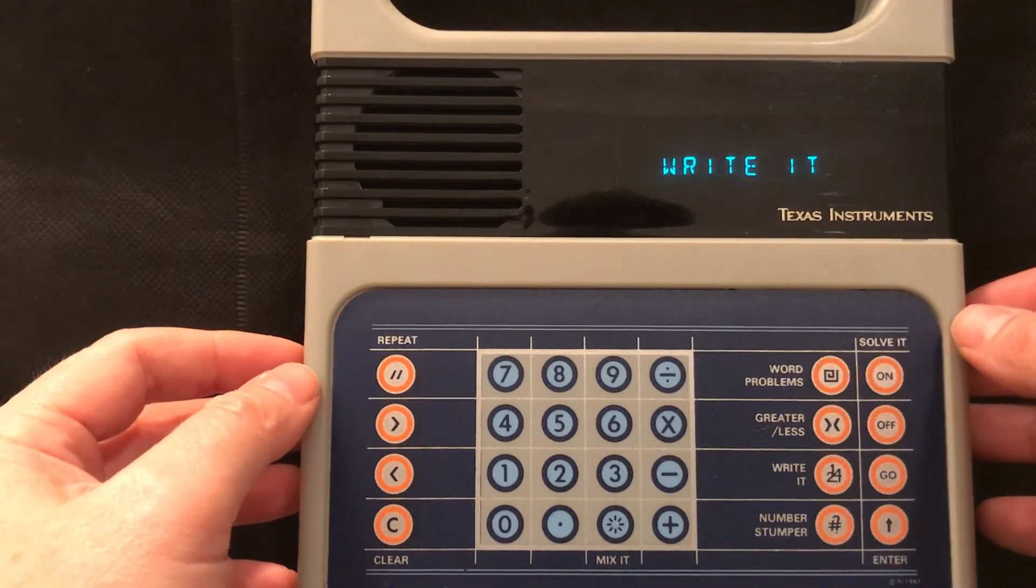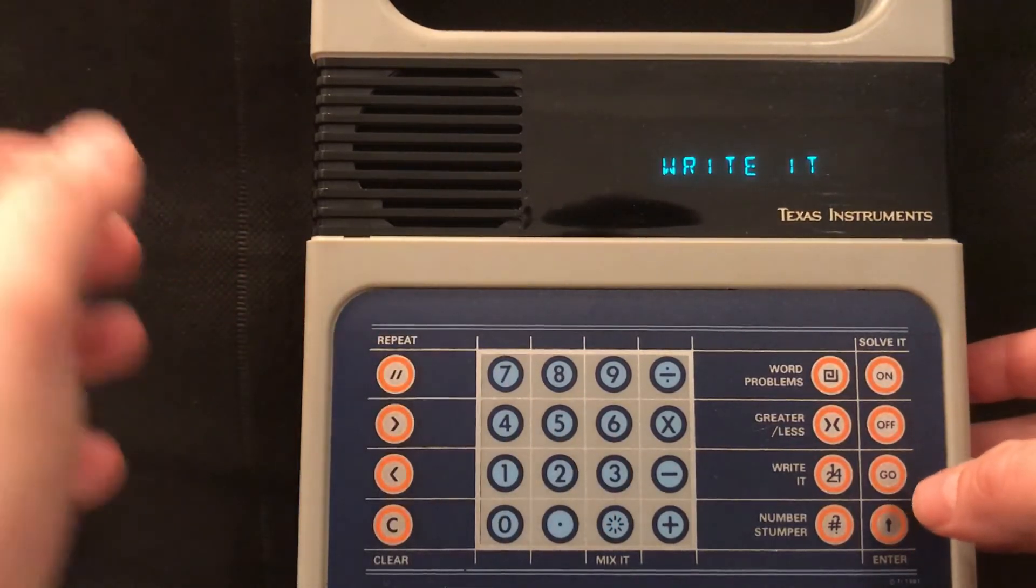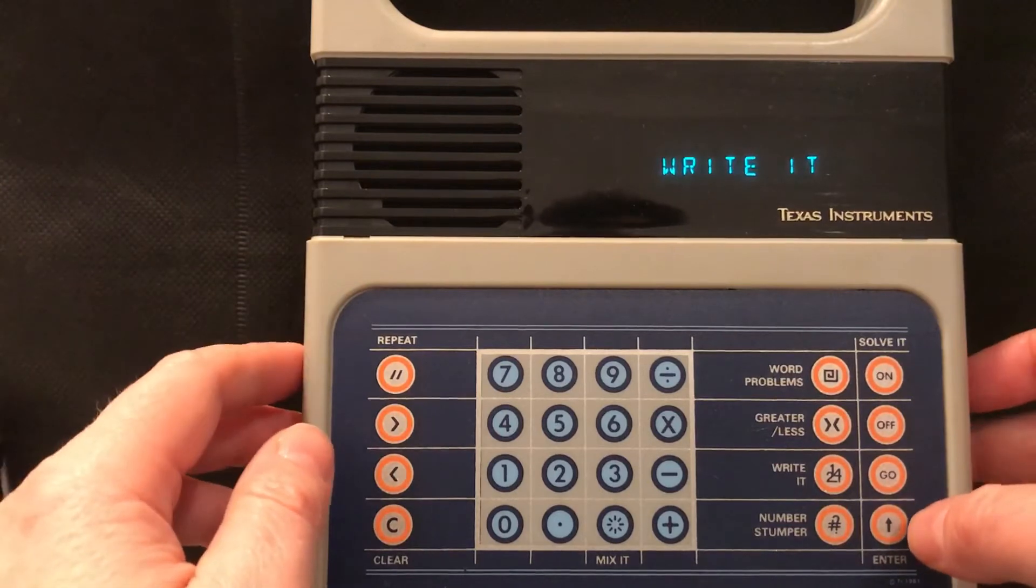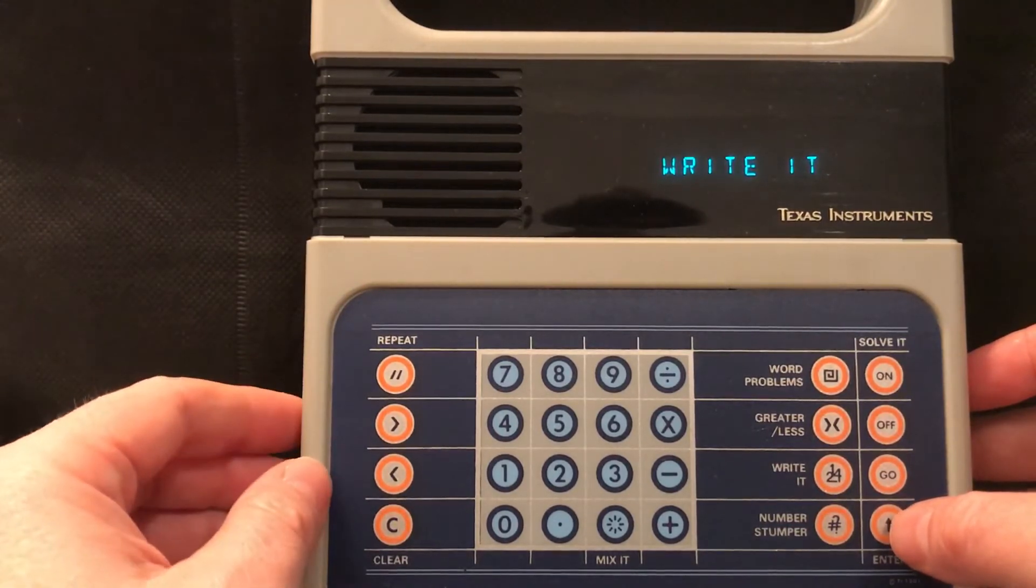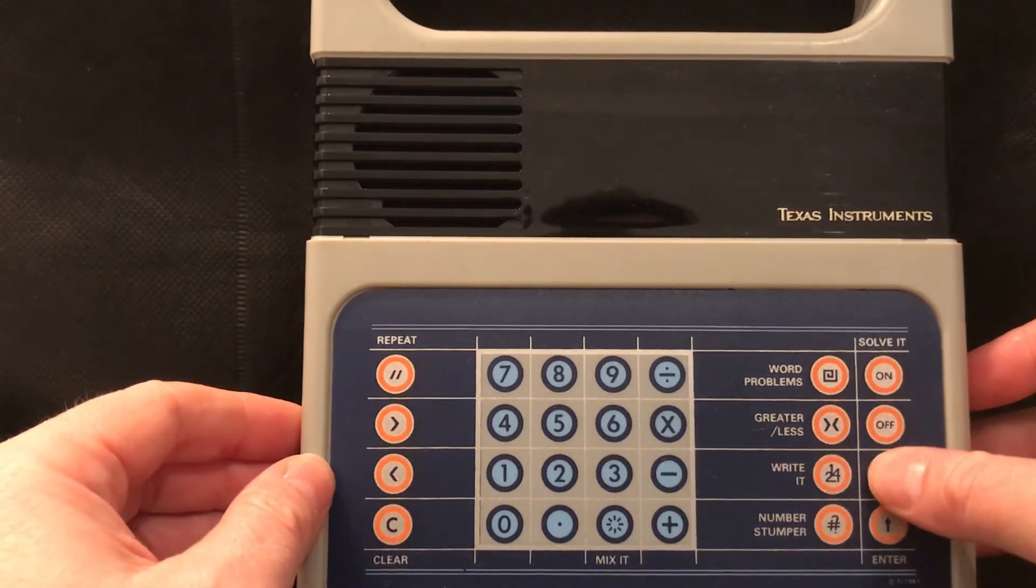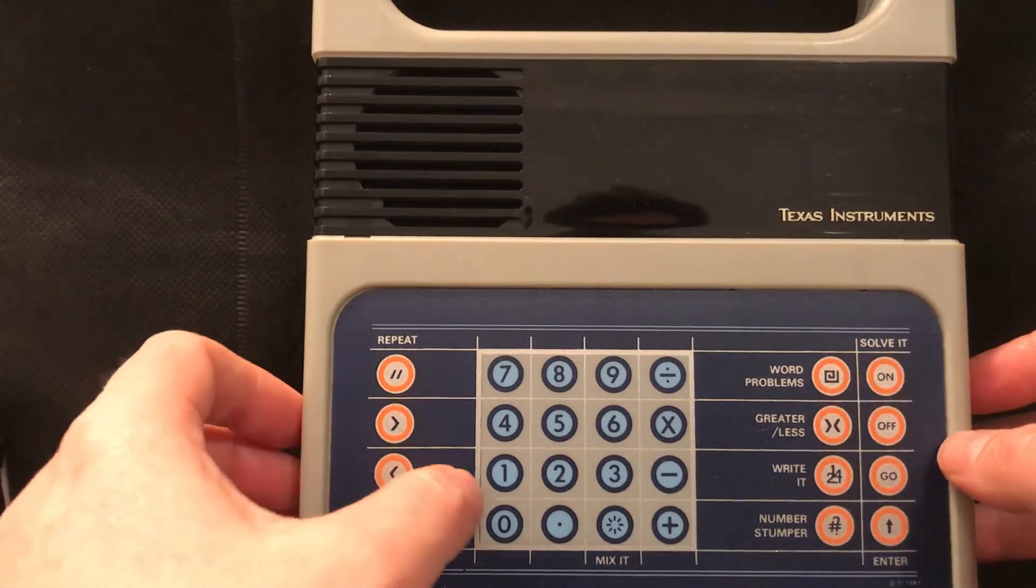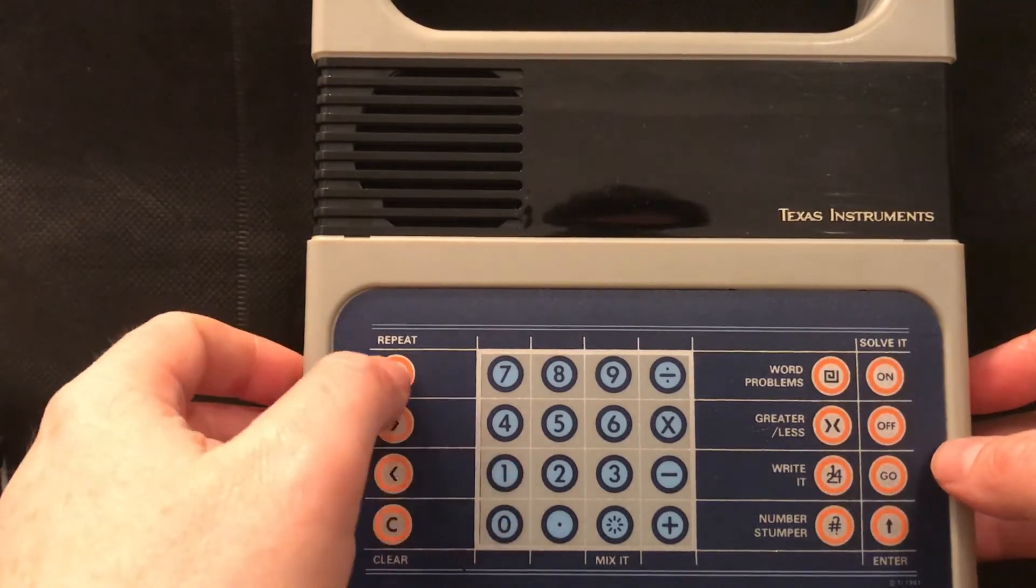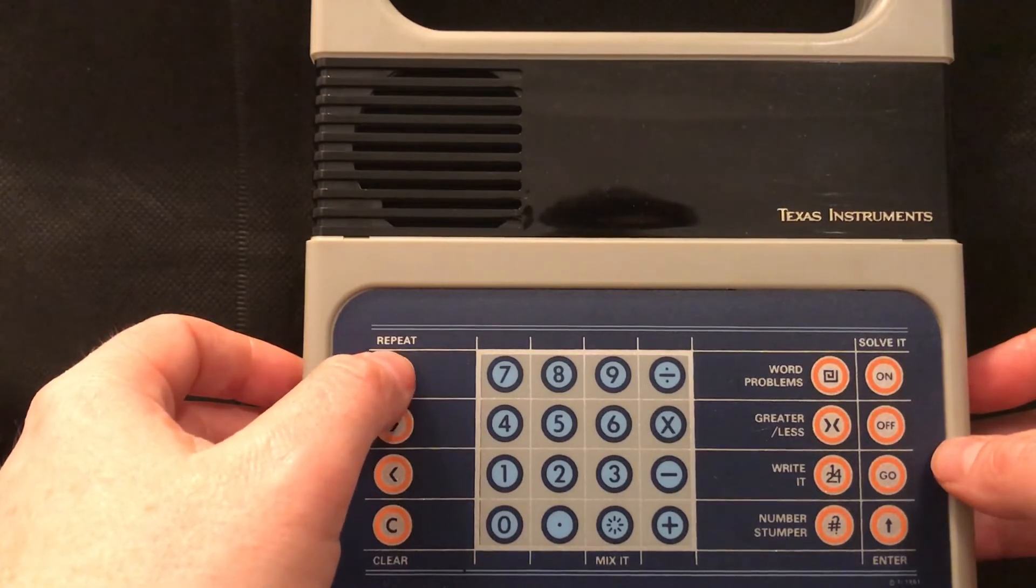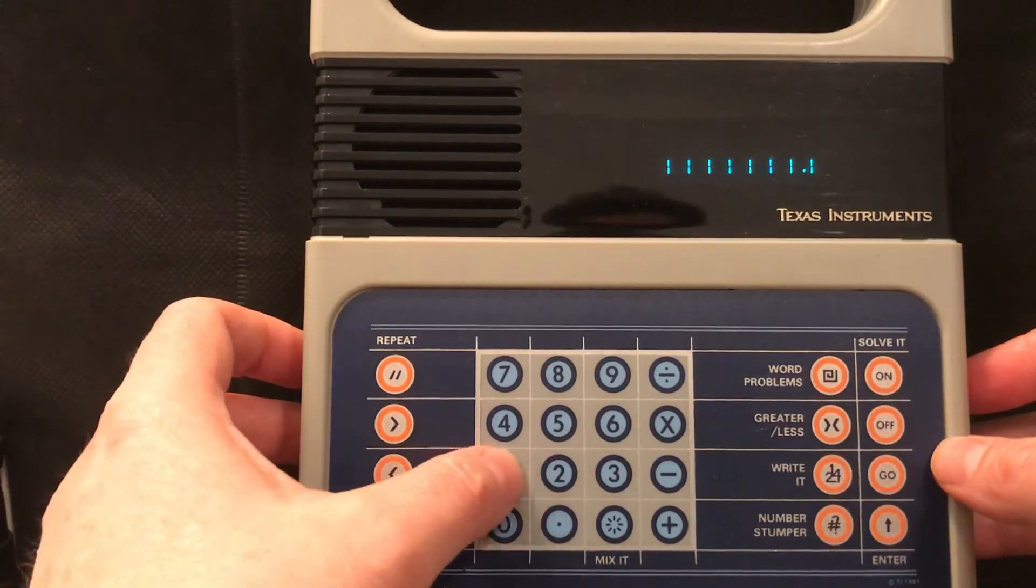Write It. Level one. And what it does here is it reads, level three, it says a number and you've got to then type that number in and it is quite difficult especially on level three because it mixes the units up. I'll show you what I mean. One million one hundred eleven thousand one hundred eleven and one tenth.